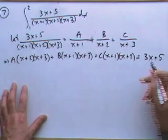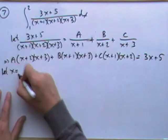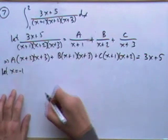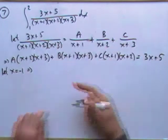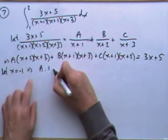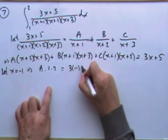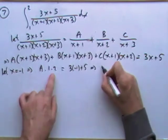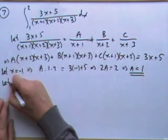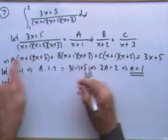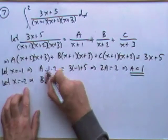Having written it the other way around, the 3x + 5 can be written on this side. The idea is to knock terms out. To find A, put x = -1 so the other terms vanish: A times 1 times 2 — putting in negative one gives 2A = 2, which means A = 1.